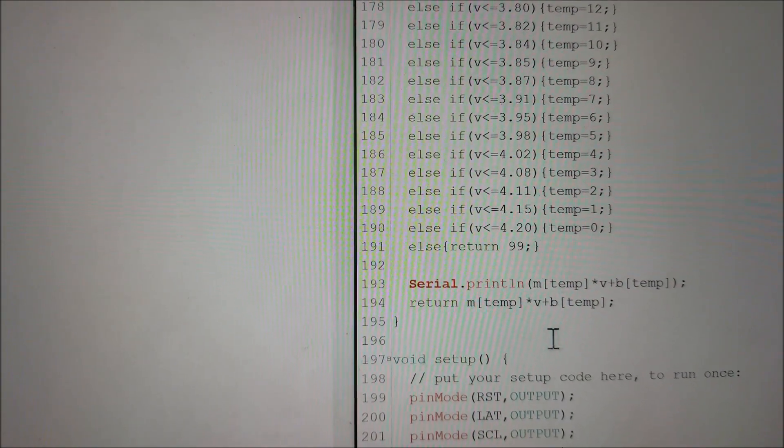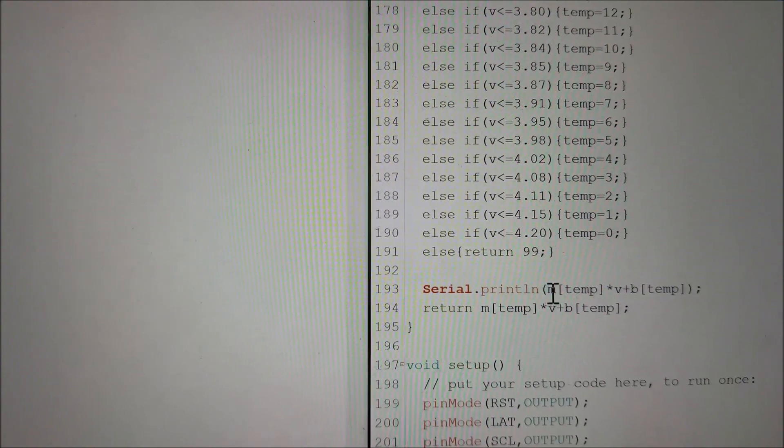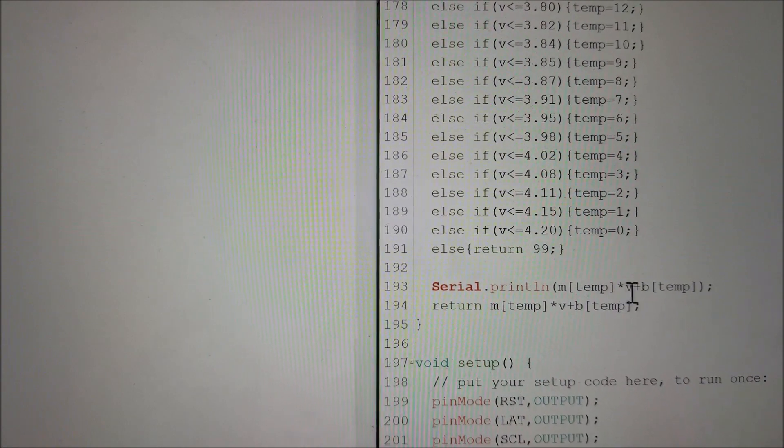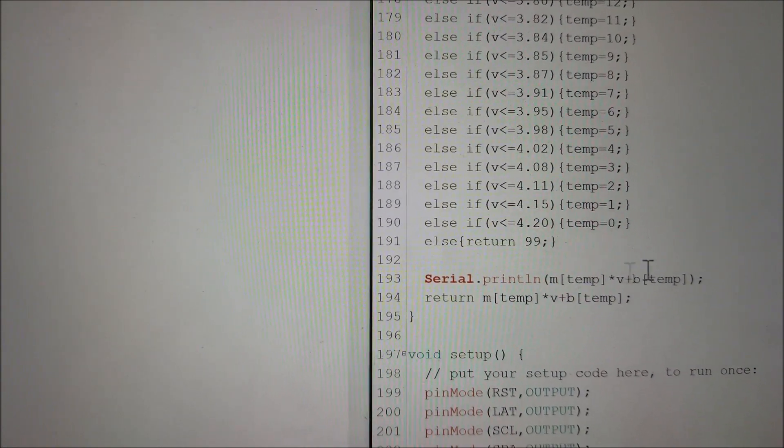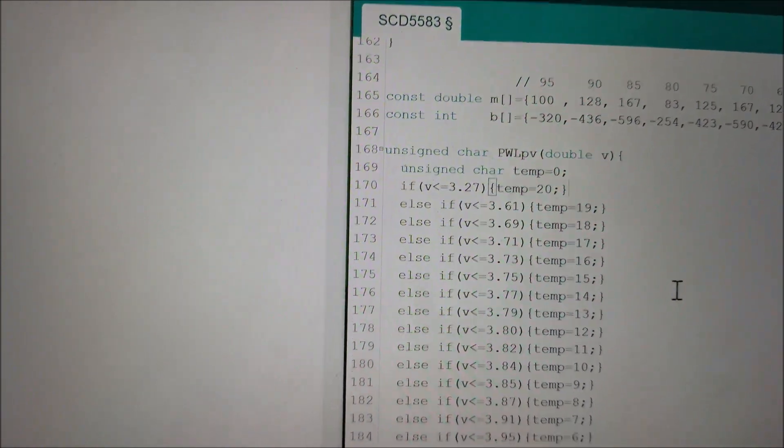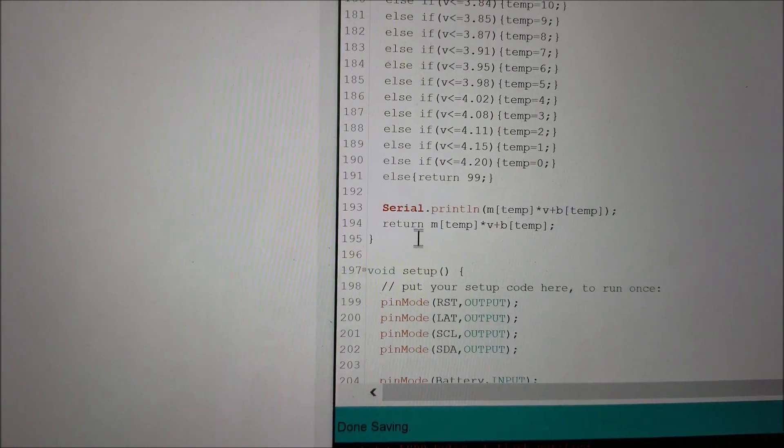So that allows me then to just plug in that equation. I'm solving for Y. So Y equals M times V, which is our X in this case, plus B. And the temp value selects which index to look at, depending on what range it calculated. It was in up here and it just returns that value. I'm actually printing it out over serial as well.